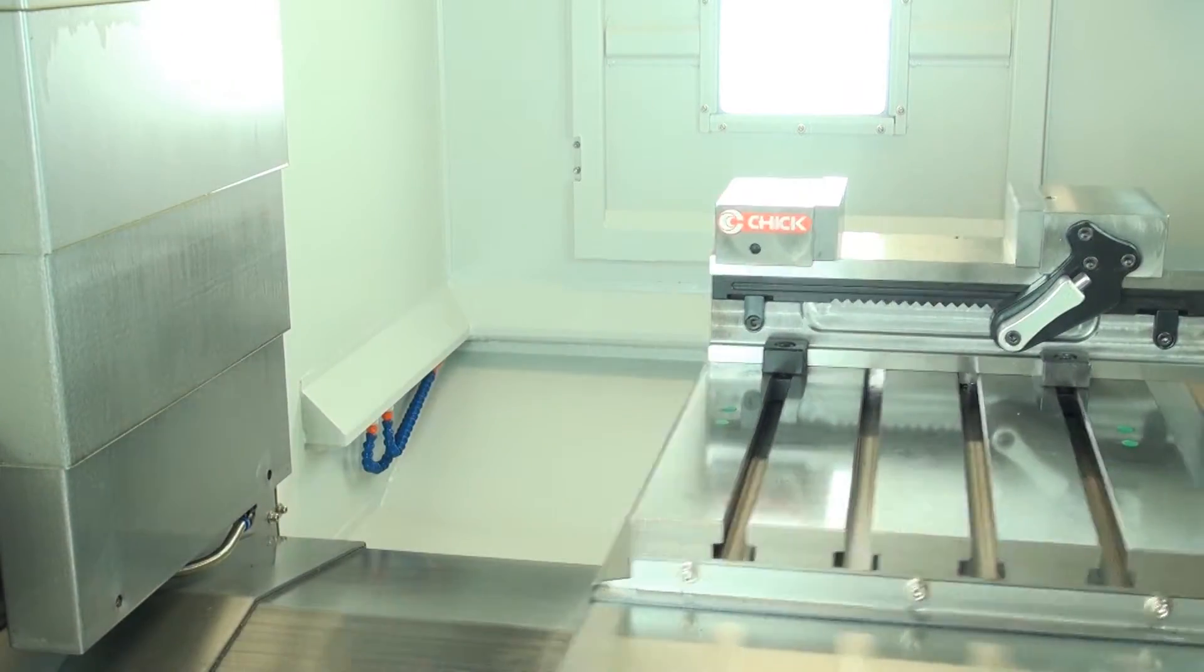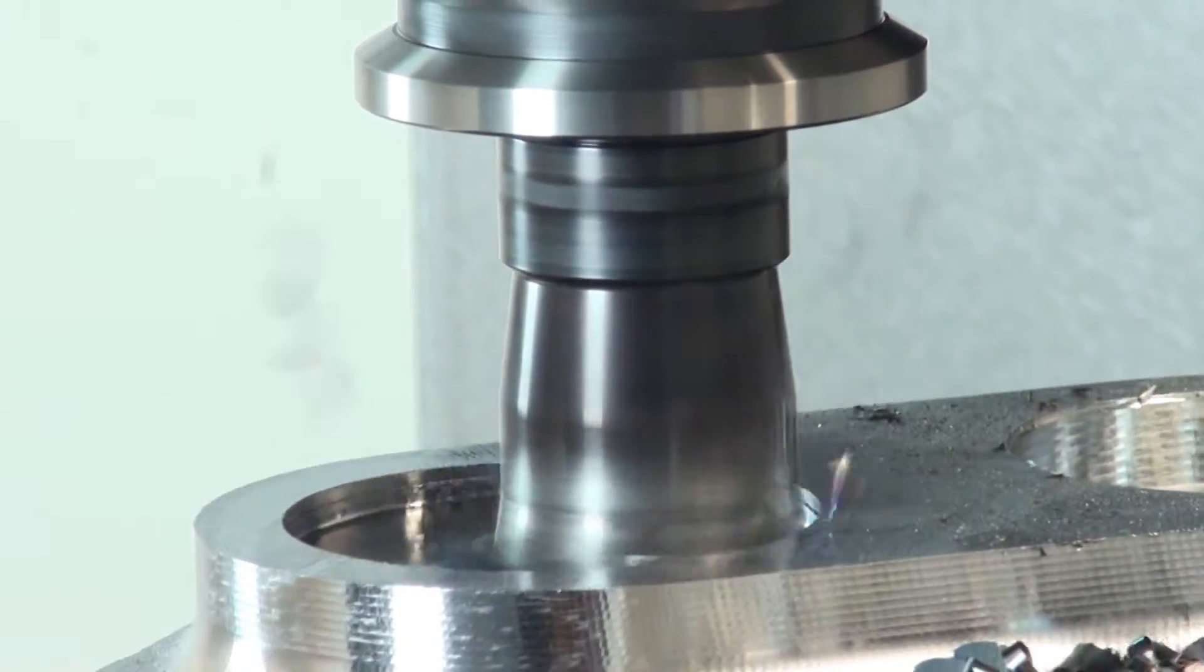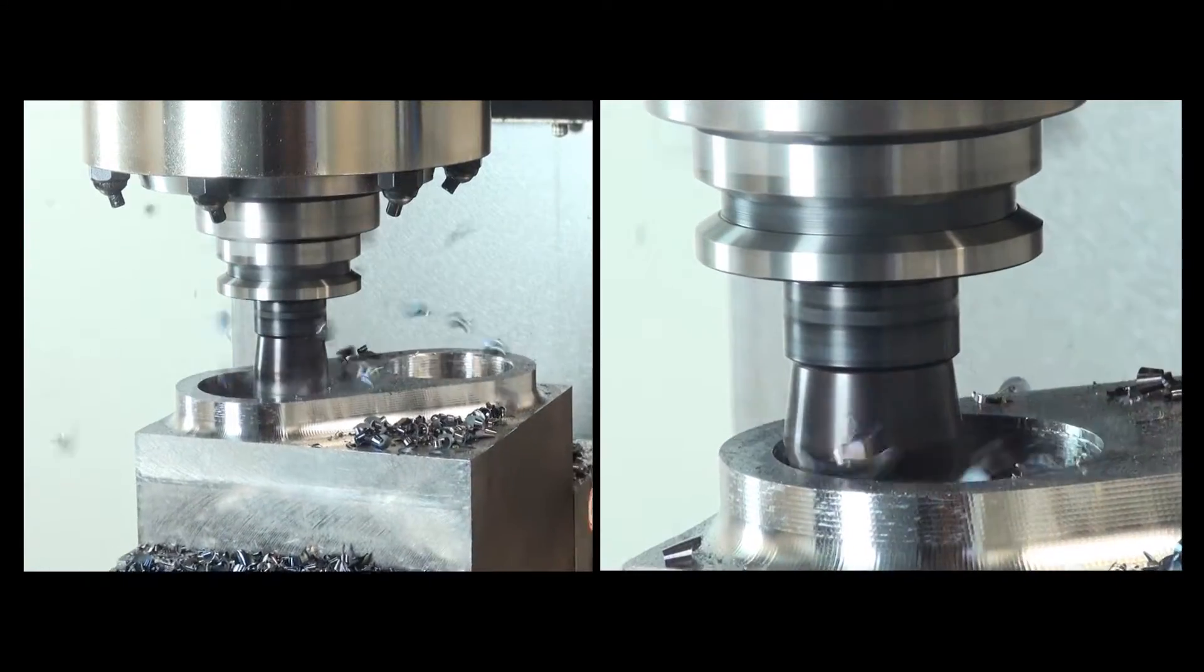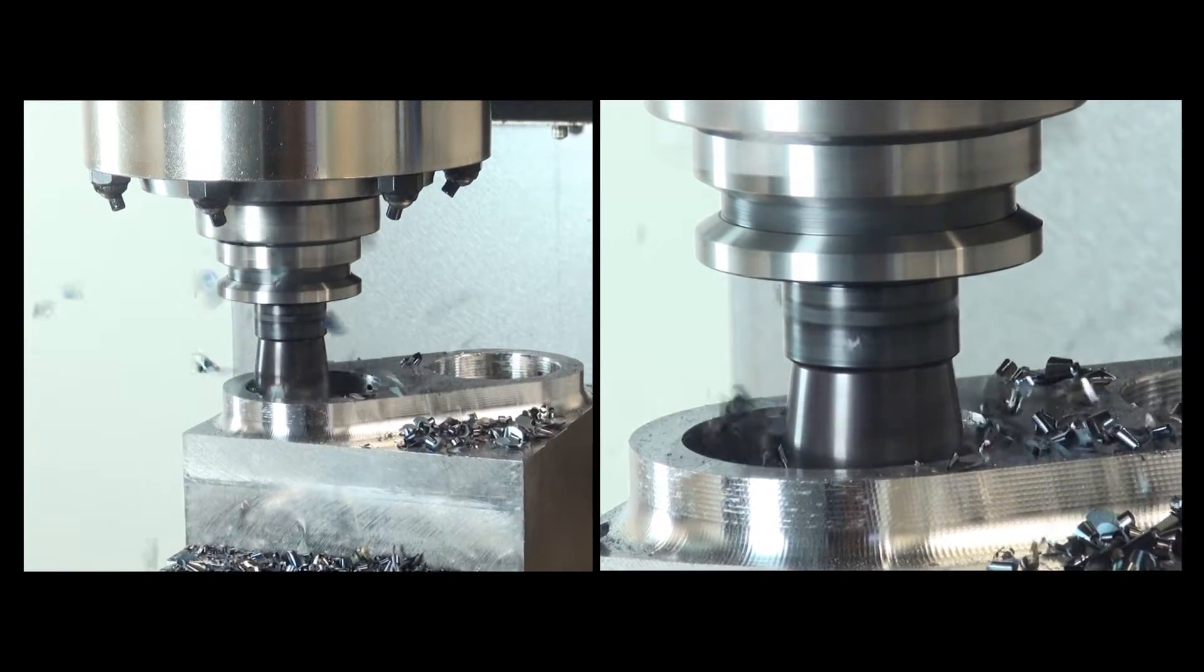Spindle speed range is 20-11,000rpm driven by an 11kW FANUC motor with a standard BT40 taper and optional cap flange.